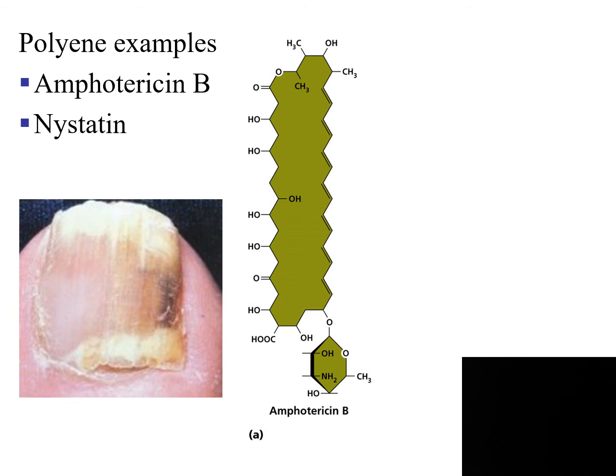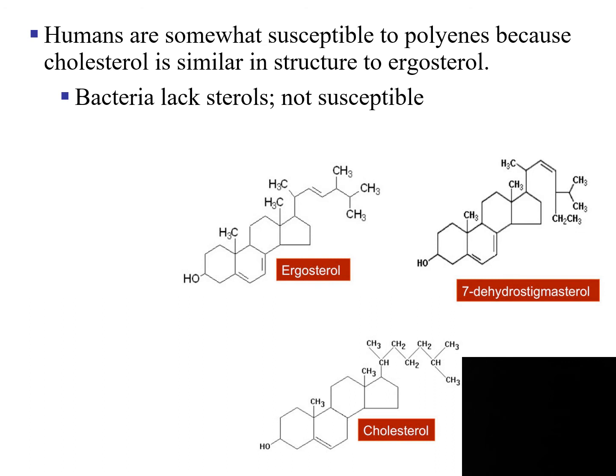Examples of polyenes are amphotericin B and nystatin. Humans are somewhat susceptible to polyenes because cholesterol is so similar to the ergosterol found in the membrane of fungi that it can affect us too. But bacteria do not have sterols, so this polyene does not affect bacteria.